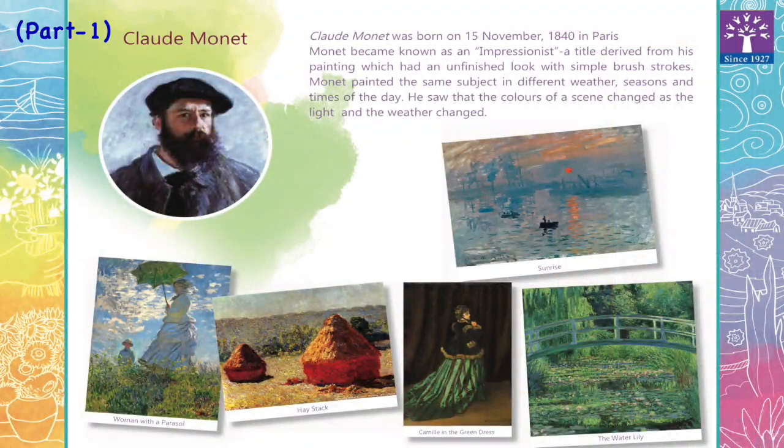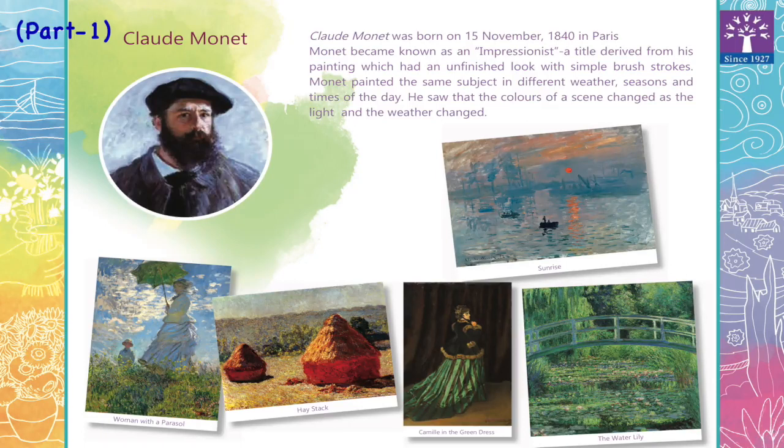Claude Monet was born on 15th November 1840 in Paris. Monet became known as an impressionist, a title derived from his painting which had an unfinished look with simple brush strokes.